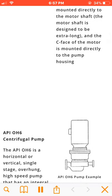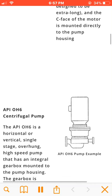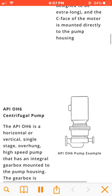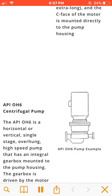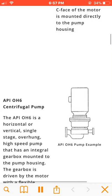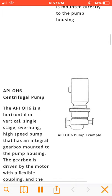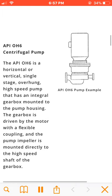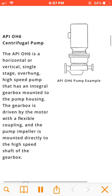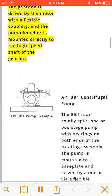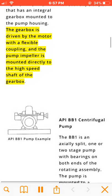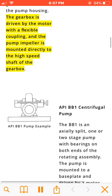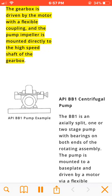The API OH6 is a horizontal or vertical, single-stage, overhung, high-speed pump that has an integral gearbox mounted to the pump housing. The gearbox is driven by the motor with a flexible coupling, and the pump impeller is mounted directly to the high-speed shaft of the gearbox.